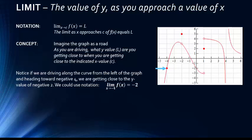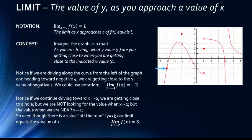Notice if we continue driving towards x equals negative 2, we are getting close to a hole, but we're not looking for the exact value at x equals negative 2 — we're looking for the value as we're near it. As we get closer, notice that our limit value is 3, whereas the functional value is 5. So be careful: a limit is about the value as you approach a specific value of x, not exactly when it equals that value.